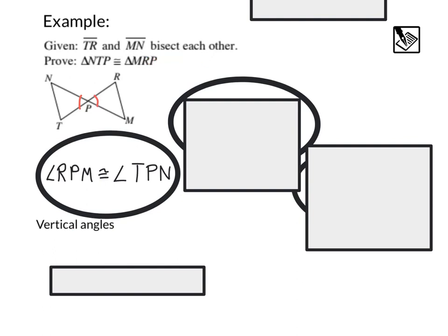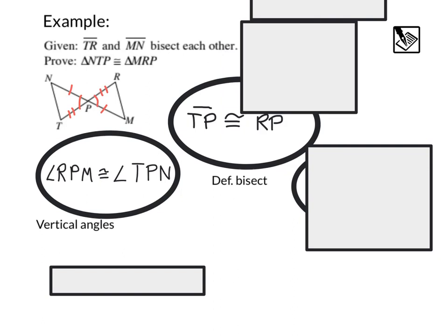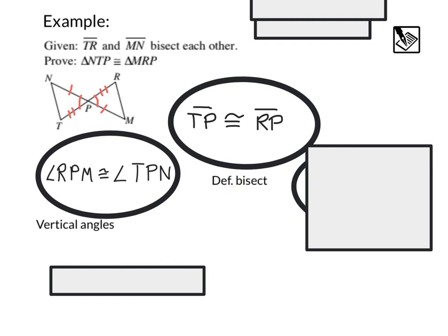What about that bisect each other line? Well, if two lines bisect each other, that means that the individual parts are going to be congruent to one another because it's cutting each big segment in half. This would let us say that side TP is congruent to side RP, definition of bisect.